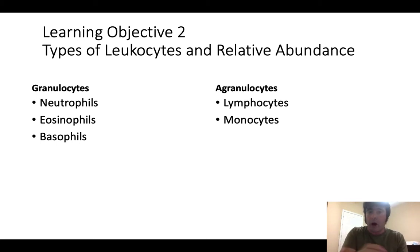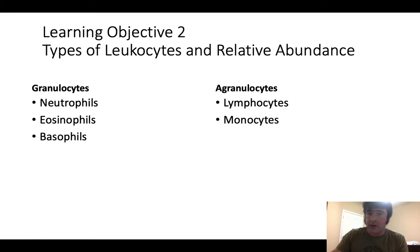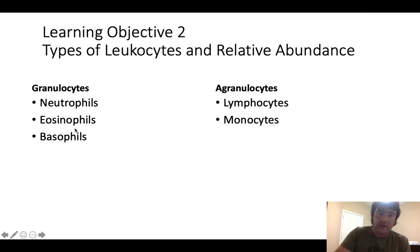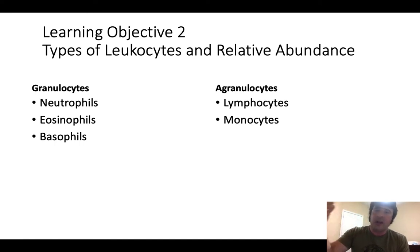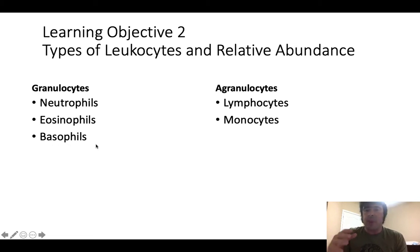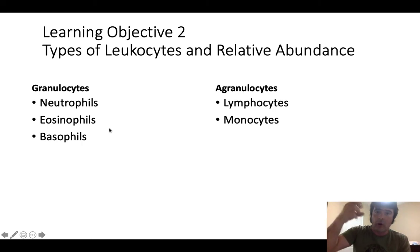The first broad category of white blood cells are granulocytes. Granulocytes get their name because under a microscope, when stained, they have easily observed granules in their cytoplasm. All granulocytes have the suffix -phil, from Greek philos meaning loving. Neutrophils love neutral stain. Eosinophils love eosin, an acidic stain that stains really red. Basophils love basic stains, which stain very dark blue or purple. Sometimes the granules are so abundant they mask the nuclei.